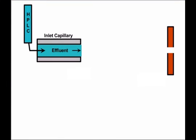If we look at an electrospray interface, it's a very simple device. We have an HPLC column which feeds the effluent from that column through an inlet capillary. That capillary is in the atmospheric pressure region of the interface. This atmospheric pressure region is a closed region, but it's not evacuated — it isn't under vacuum. Atmospheric gases are simply present.